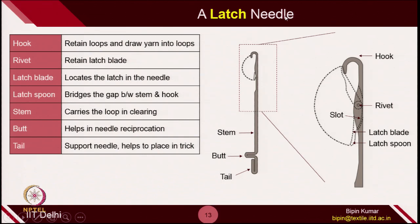Now let's see the functioning of each part of the needle. The hook retains the loop and draws yarns into the loop. The rivet allows the latch to slide — it can close the hook and open the hook. The latch blade and latch spoon are also important: the latch spoon helps to close the hook securely so the old loop does not go back inside the hook once it comes out, and the blade goes inside the slot so it remains stable during the opening and clearing process. The stem is the point where the old loop slides. The butt is the element of the needle which interacts with the cam jacket. And the tail is the supporting part which helps fix the needle inside the bed.